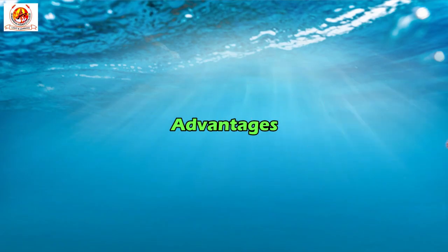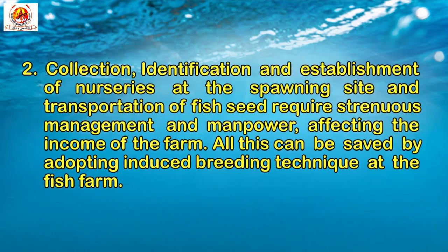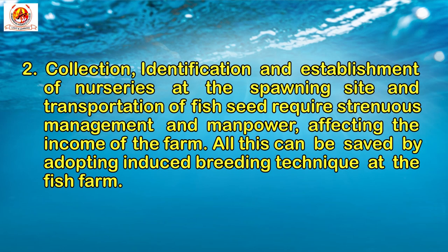Now let us come to the advantages. Point one: by inducing the fish to spawn separately in a pond, the risk of fish seeds getting mixed with undesirable and precious fish spawn is overcome. Point two: collection, identification, and establishment of nurseries at the spawning site, and transportation of fish seeds, require skilled management and manpower affecting the income of the farm. All these can be saved by adopting the induced breeding technique at the fish farm.